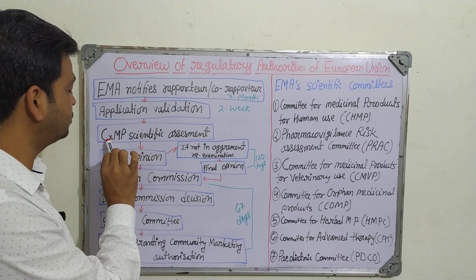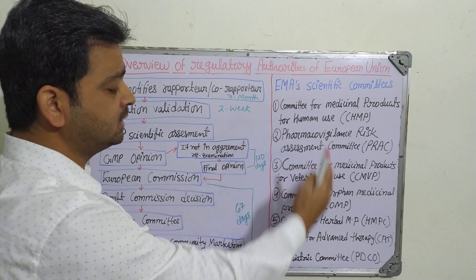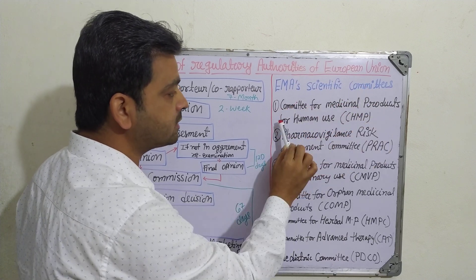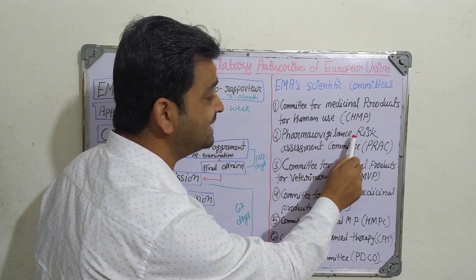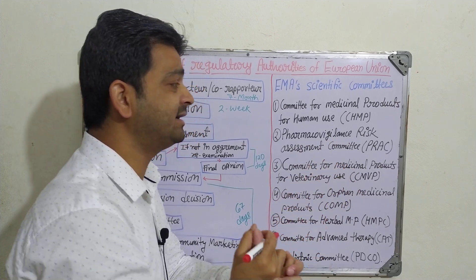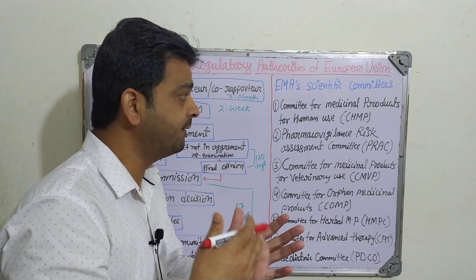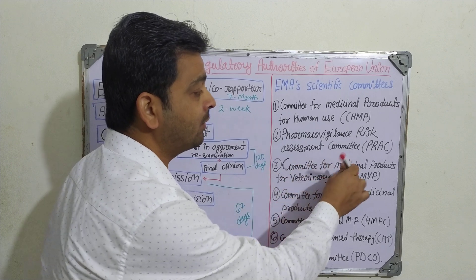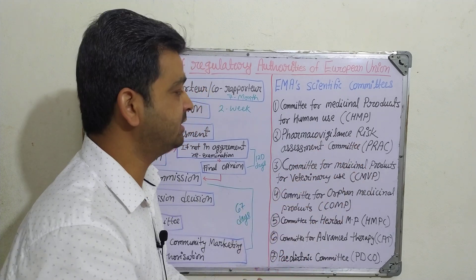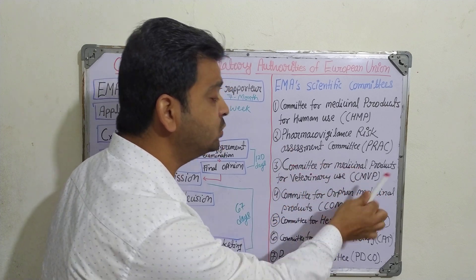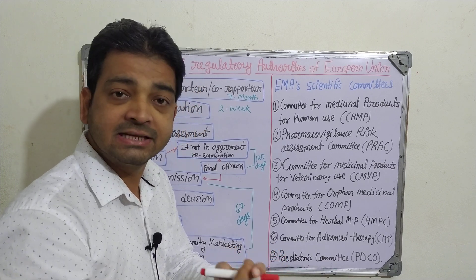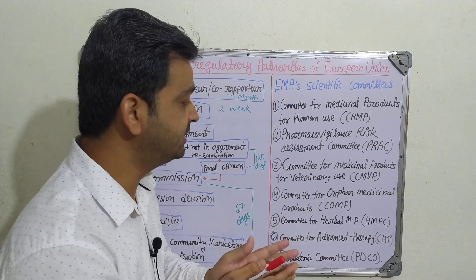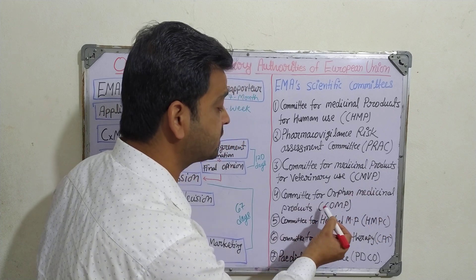There are seven scientific committees under the European Medical Agency. The first is the Committee for Medicinal Products for Human Use (CHMP). The second is the Pharmacovigilance Risk Assessment Committee (PRAC), which assesses adverse effects, side effects, and risks for new drugs in preclinical or clinical stages. The third is the Committee for Medicinal Products for Veterinary Use (CVMP), which reviews and gives decisions on animal medicines. The fourth is the Committee for Orphan Medicinal Products (COMP).